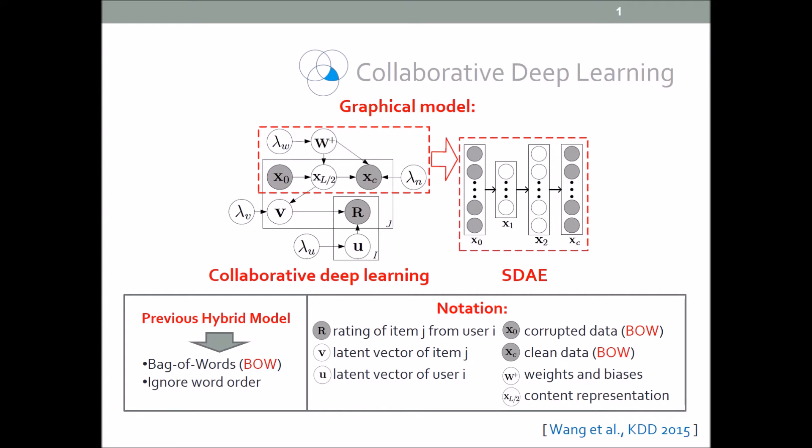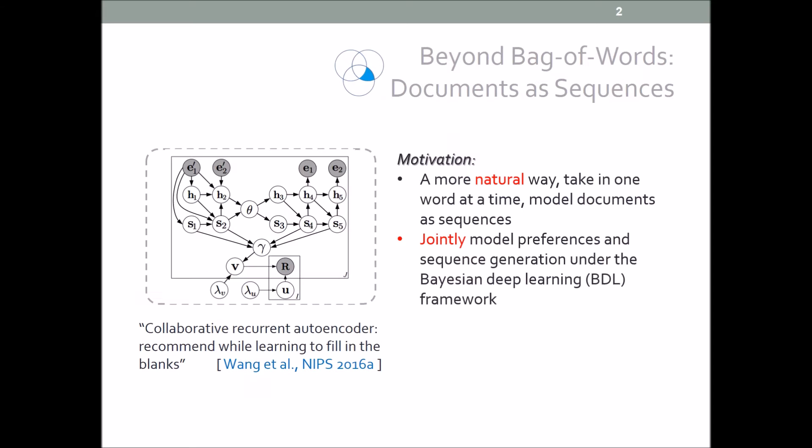Previous hybrid recommendation models often take bag-of-words representation as input and ignore the word order. In this paper, we wish to model the text in a more natural way, that is, to take in one word at a time and model documents as sequences.